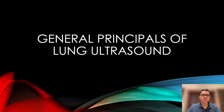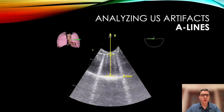Let's now go through the general principles of lung ultrasound. Lung ultrasound generally consists of analyzing ultrasound artifacts. A-lines are normal, horizontal repetitions of the pleural line generated by a phenomenon called reverberation. They should be absent with lung consolidation, erased by B-lines, but may be present even in the presence of a pneumothorax.